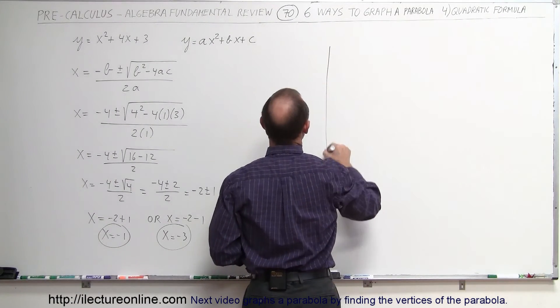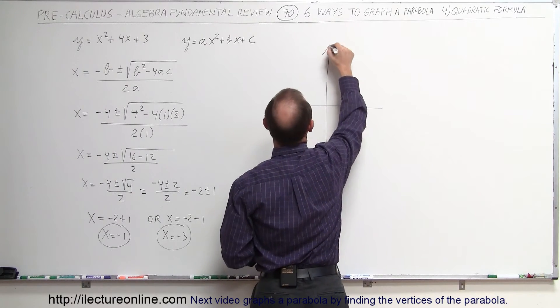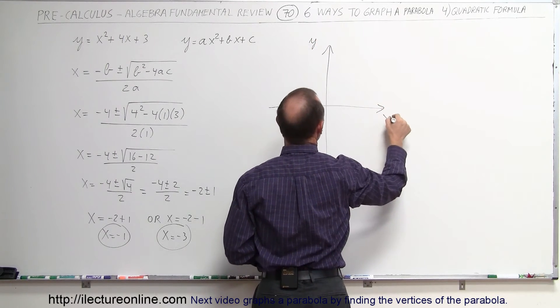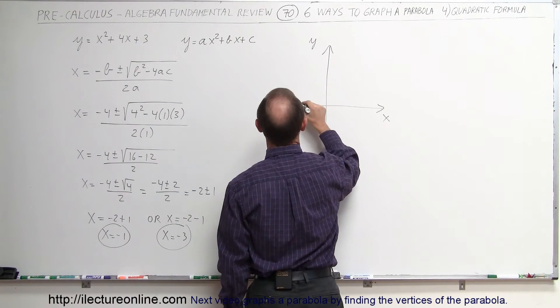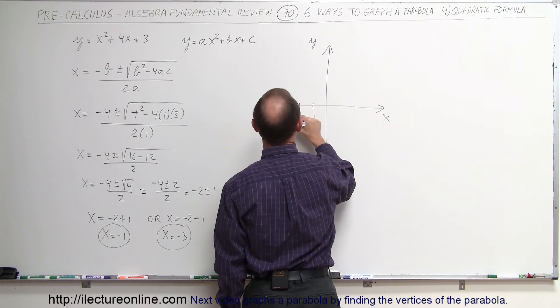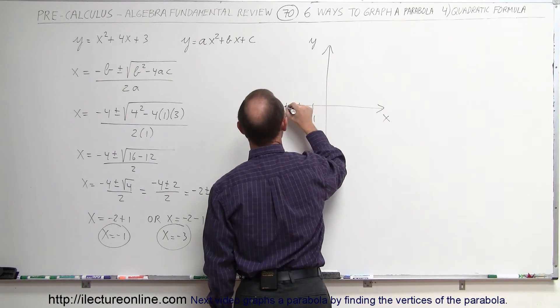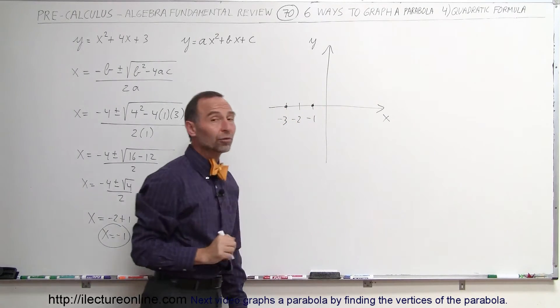So graphing our y-x-axis, here's our y-axis, here's our x-axis. x equals negative 1, which is right there. x equals negative 2, negative 3, negative 3 is right there. So we know that it crosses the x-axis at those two points.